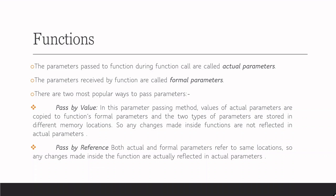Functions have some input values which are called the parameters or arguments. They are passed to the function, and the function operates on these values. Parameters received by the function are called formal parameters, and the real parameters we give during the function call are the actual parameters. There are two ways to pass the parameters. In pass by value, the values of the actual parameters are copied to the function's formal parameters, and the two types of parameters are stored in different locations. Any changes made inside the function are not reflected in the actual parameters.